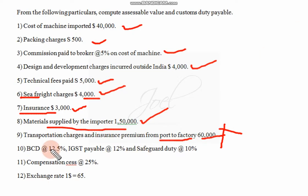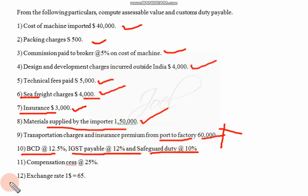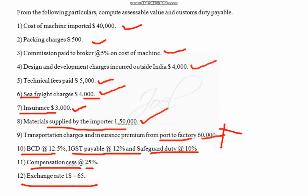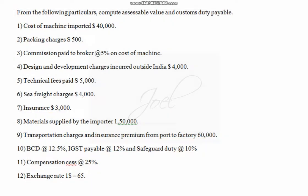Other information: BCD is given at 12.5%, IGST is given, safeguard duty is there, social welfare surcharge is not given so we are supposed to check that, and compensation cess 25% is given. Exchange rate — only one amount is given. When only one amount is there in the problem, we need not compare and we need not worry; that amount itself we have to consider.